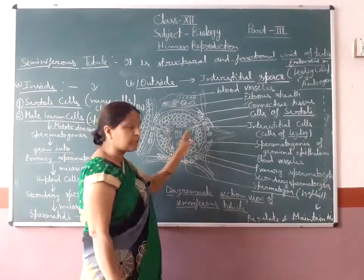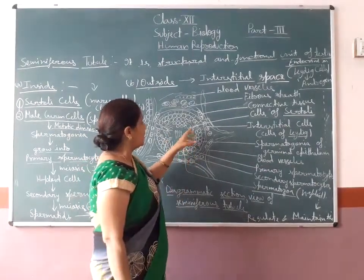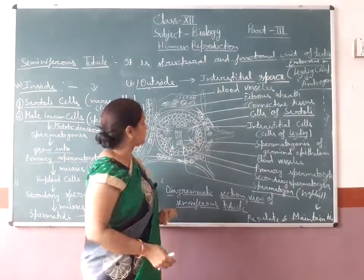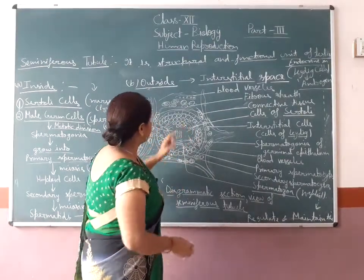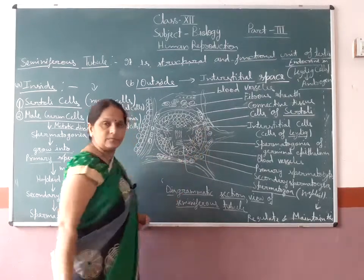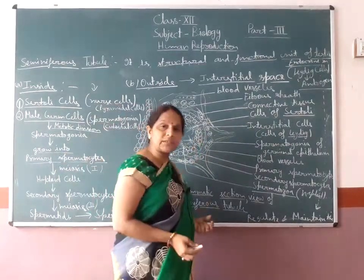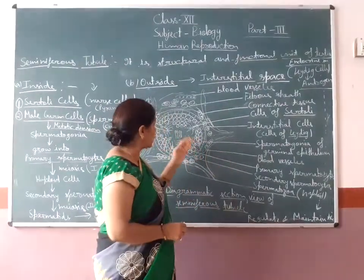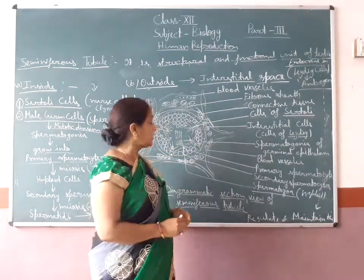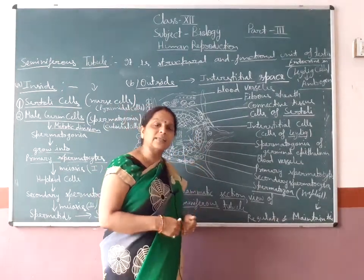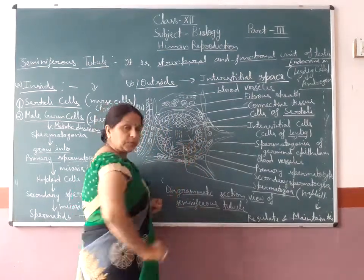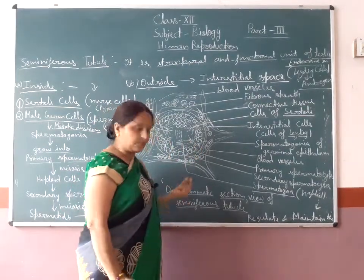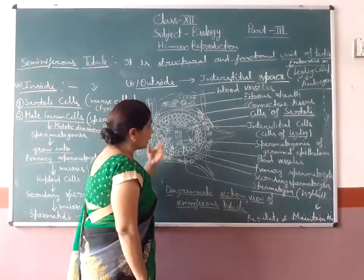The Sertoli cells are the specialized cells which nourish the developing spermatozoa. Then there is the primary germinal layer, which undergoes mitosis division forming spermatogonia. After mitosis, it forms primary spermatocytes, which then undergo meiosis division. Then secondary spermatocytes are formed, which undergo meiosis and form spermatids. Then from spermatids, spermatozoa are formed.